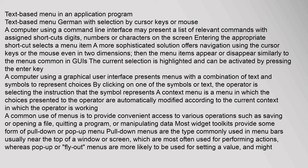A more sophisticated solution offers navigation using cursor keys or the mouse, even in two dimensions. The menu items appear or disappear similarly to the menus common in GUIs. The current selection is highlighted and can be activated by pressing the Enter key. A computer using a graphical user interface presents menus with a combination of text and symbols to represent choices. By clicking on one of the symbols or text, the operator selects the instruction that the symbol represents.